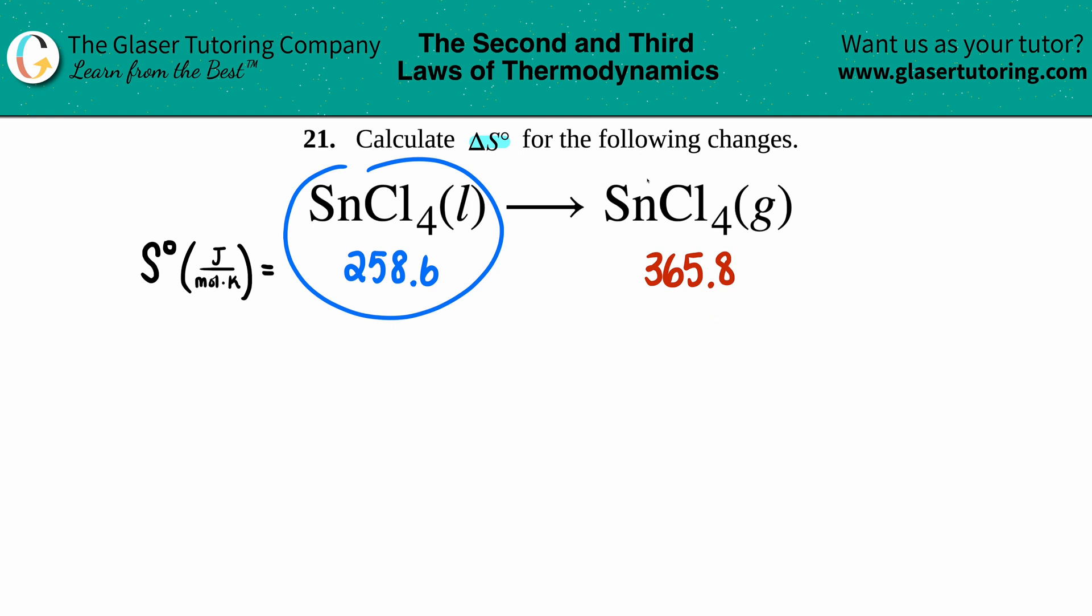Now, how are we going to find the answer? There's a simple formula: ΔS° for a given standard reaction is the sum—that's this little squiggly line here—of all of your ΔS° products minus the sum of all of your ΔS° reactants. This means we literally need to add up the products and the reactants.